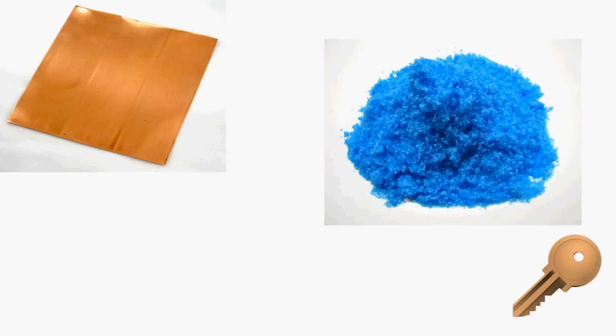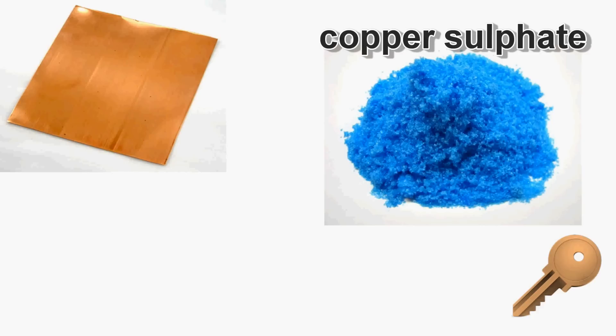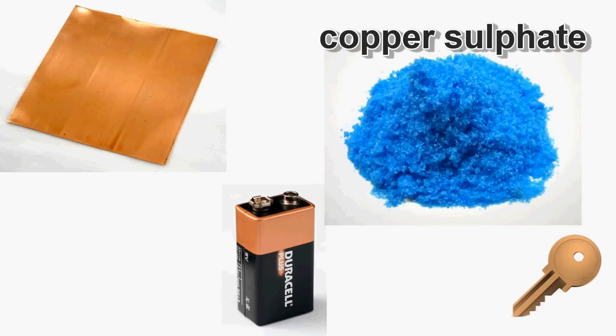To get copper plating, we need a small piece of copper, an electrolyte which is a copper compound like copper salt. It is very easily available. A 5 volt or 9 volt cell is enough to supply the required electricity.